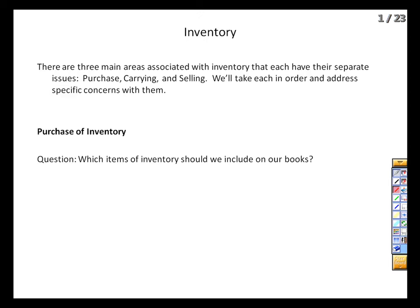Our first question is: what inventory should we be reporting on our books? That is, how do we know if this is our inventory or not? There is a general rule — inventory becomes ours when custody is obtained. When we take physical possession, it's safe to say that the inventory is ours, and when we give it to the customer, it becomes theirs.